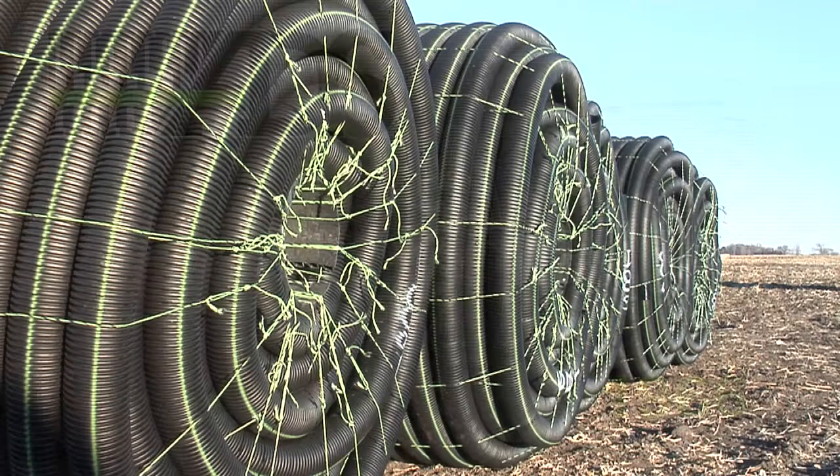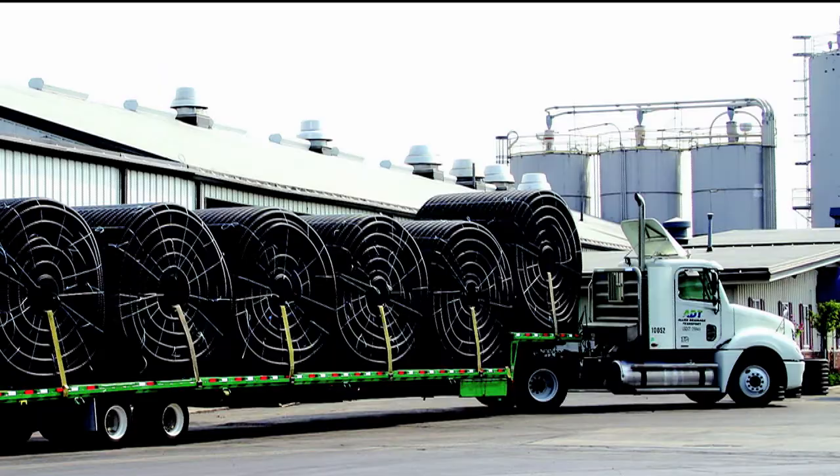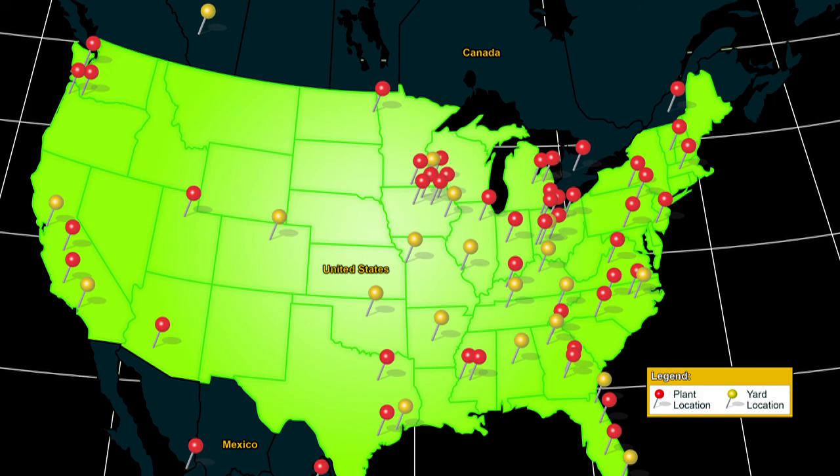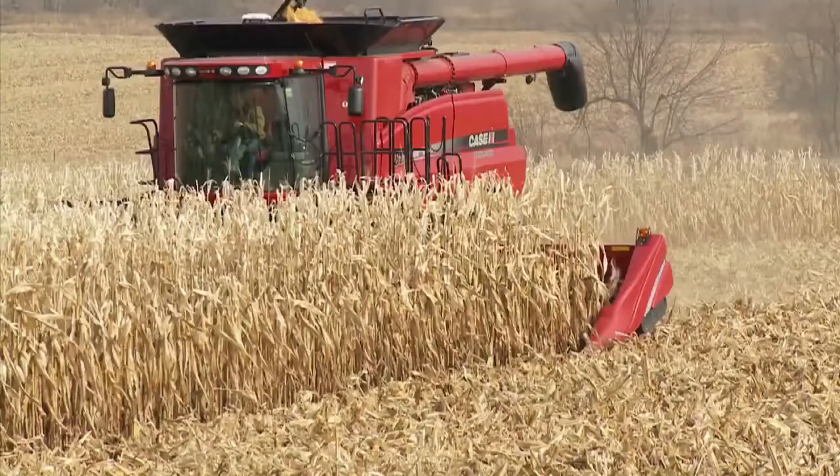Back in 1966, Advanced Drainage Systems, Inc. was the first company to start manufacturing plastic agricultural drainage pipe in the United States. Today ADS continues our leadership with superior pipe production and service capabilities. With 54 manufacturing plants and 24 distribution yards throughout the world, you can count on ADS and our green-striped pipe to be there when you need us.